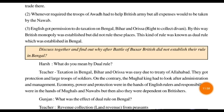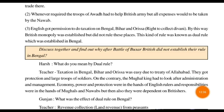By this the British monopoly was established — one empire, one ruling power. This kind of rule was known as dual rule, established in Bengal. Now both the British and the Nawabs could rule, but most things were going in favor of the British. They were imposing more things from themselves and the Nawabs could not do anything.